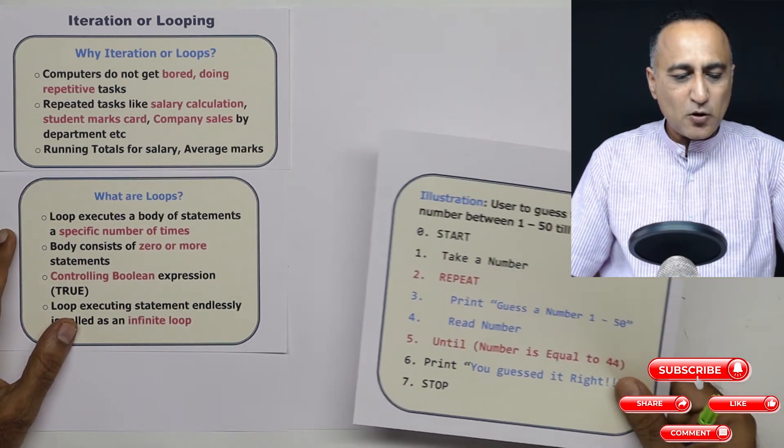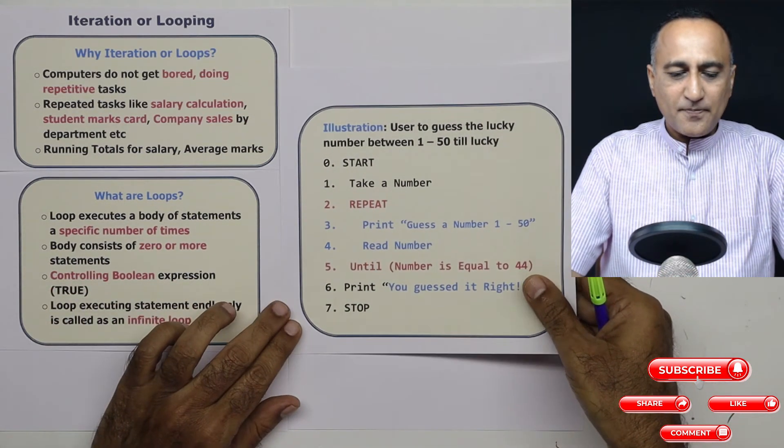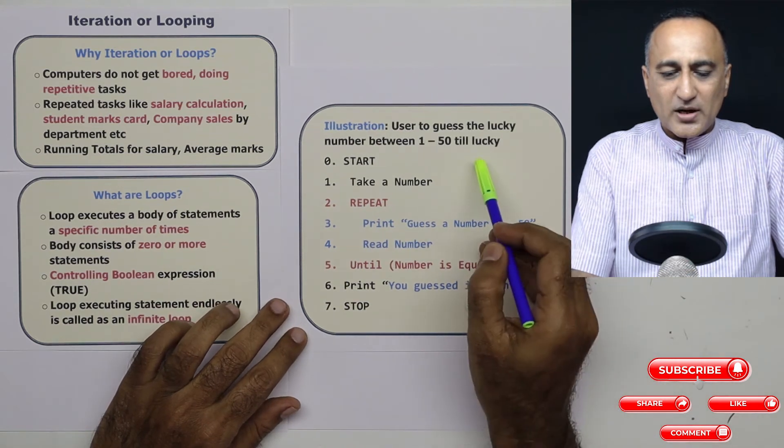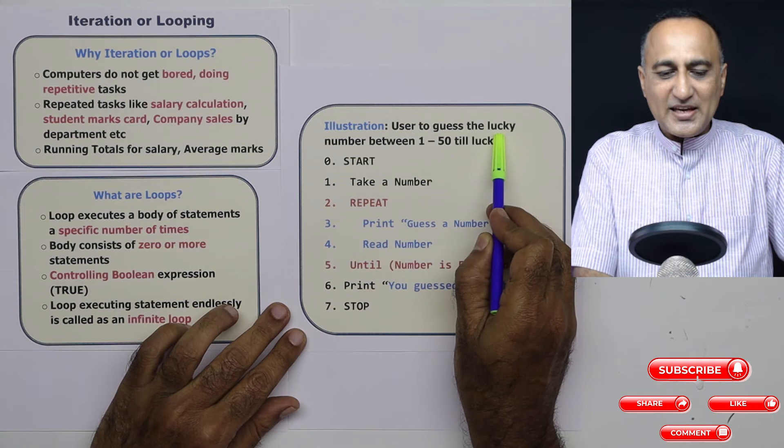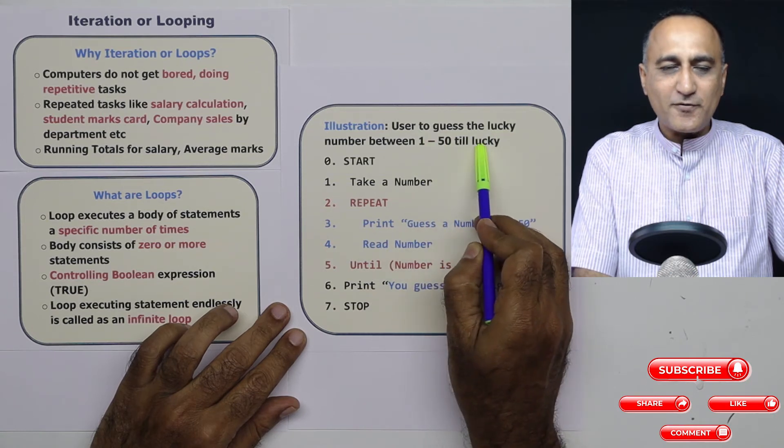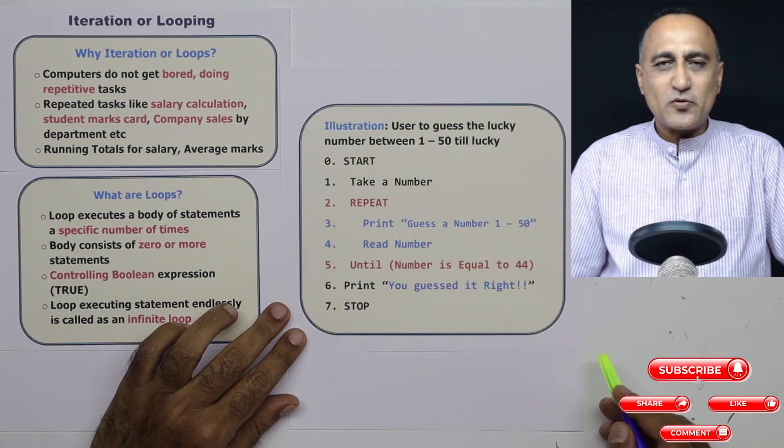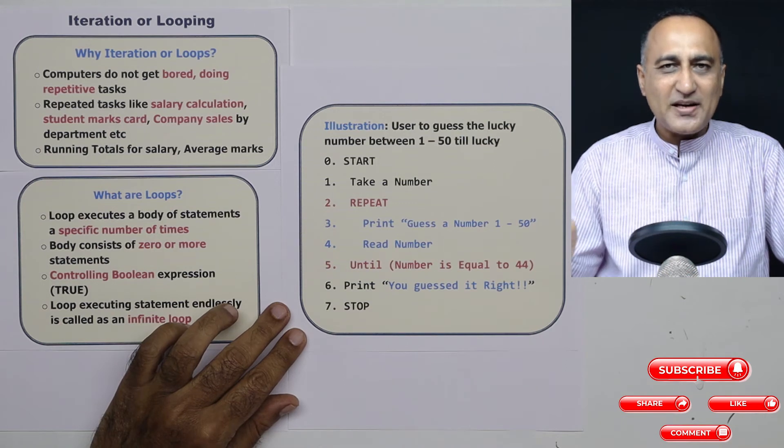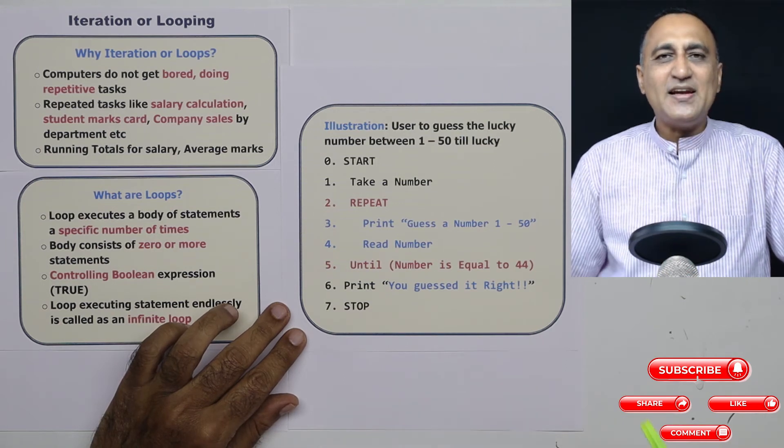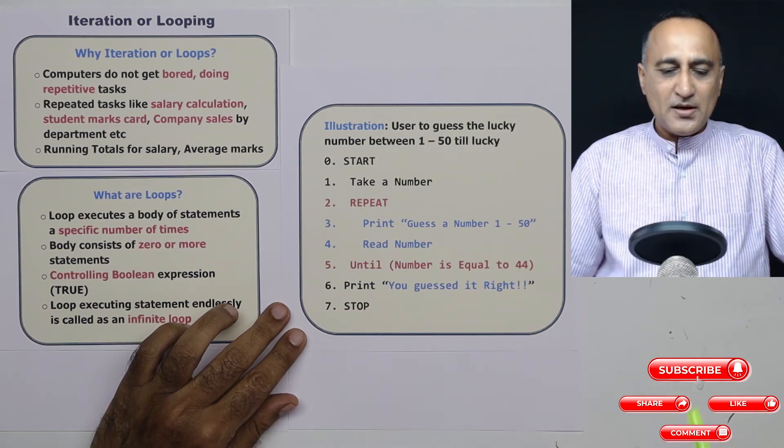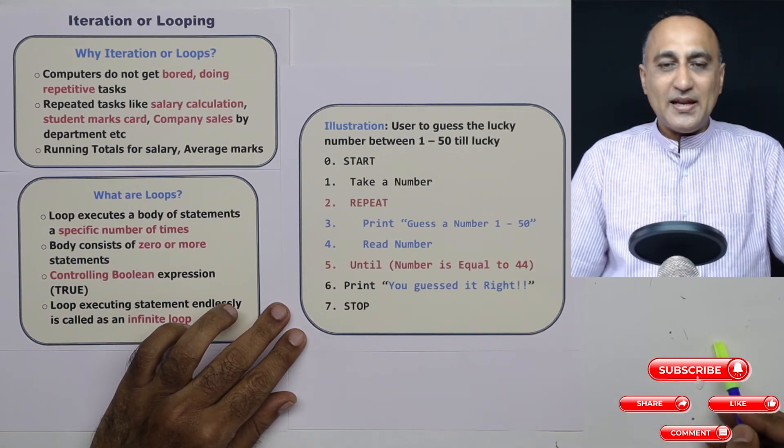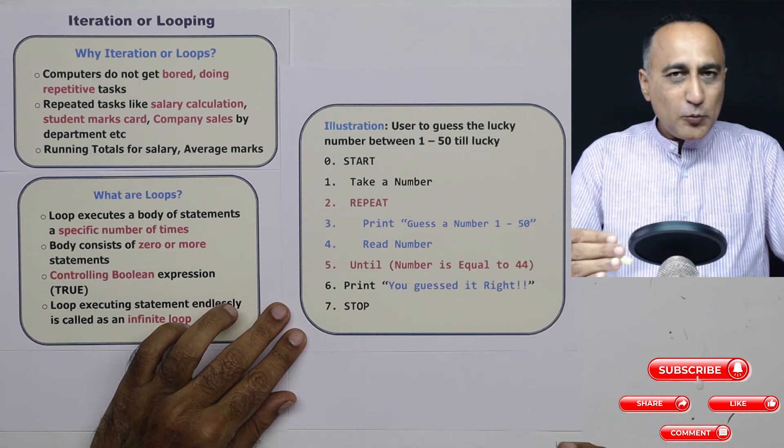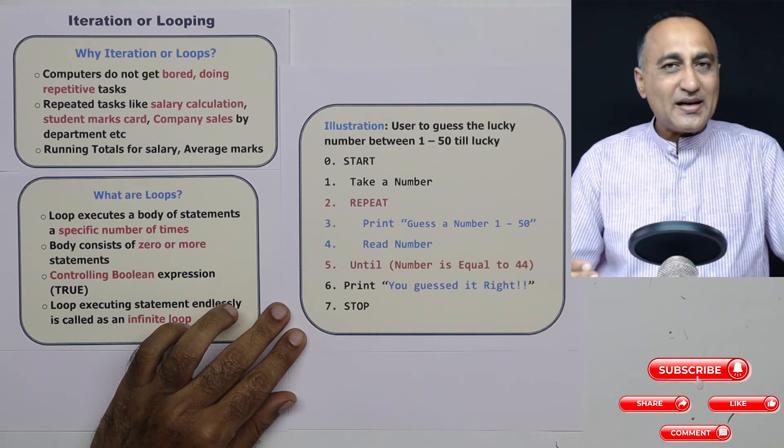In order to understand what are loops and how loops really work or how loops are used in programming, let's take a small example. In this illustration, I am asking the user to guess a lucky number between 1 to 50. The difference in this program is he can keep entering as many times as he wants till he finally enters the lucky number. In my case, I have chosen 44 to be equal to the lucky number. I am doing a looping statement using a repeat until construct or statement.